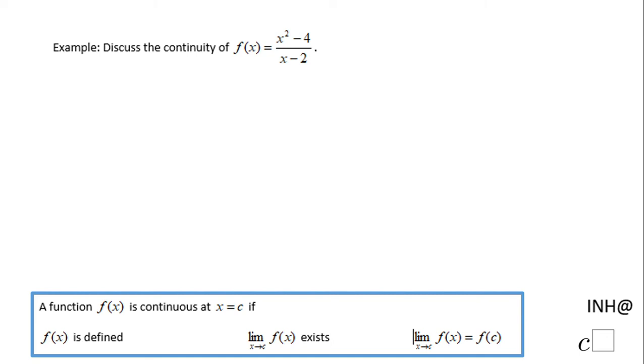Welcome or welcome back. I need help at C squared. In this example, we need to discuss the continuity of this function f of x equals x squared minus 4 over x minus 2. This is a rational function.